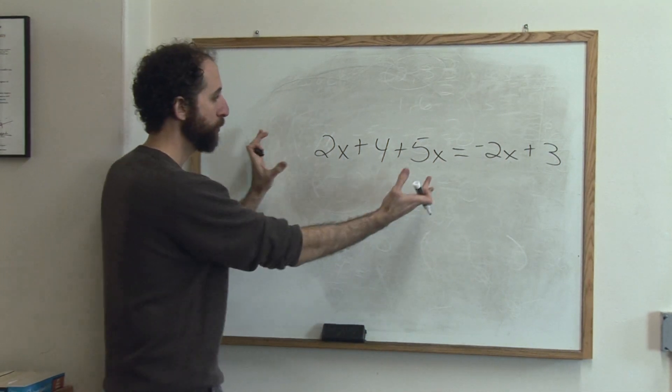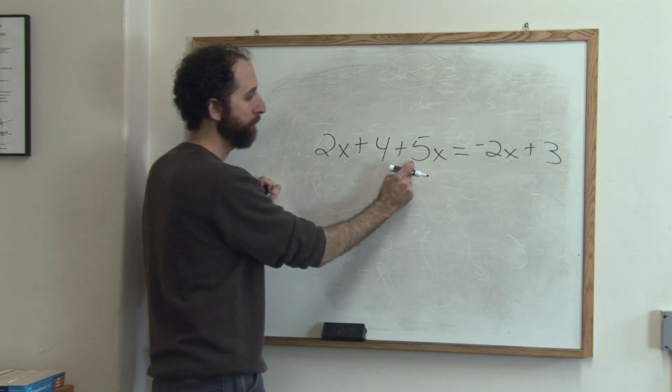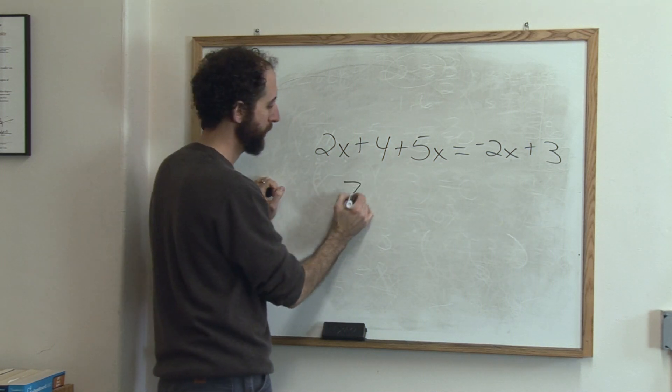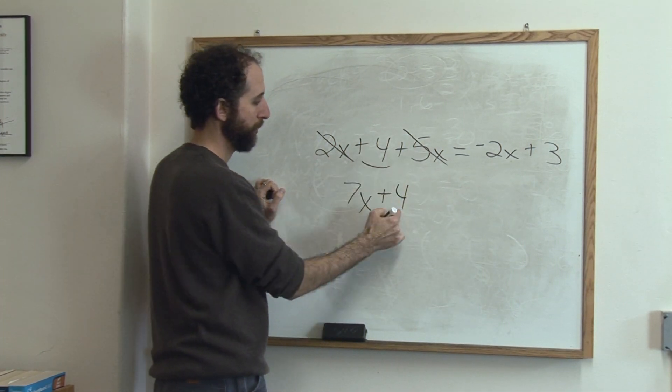So here's the process. First you're going to collect like terms on each side of the equation. So on this side, 2x and 5x are like terms. So that's 7x plus 4. This guy matches with this guy, and that one drops down.